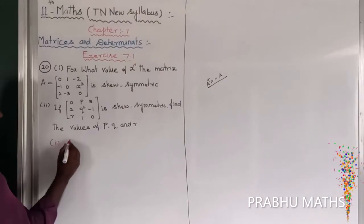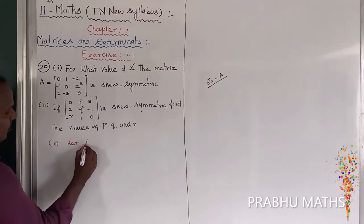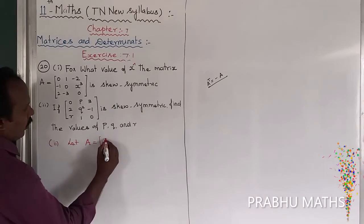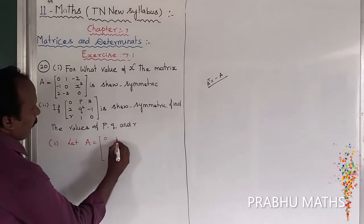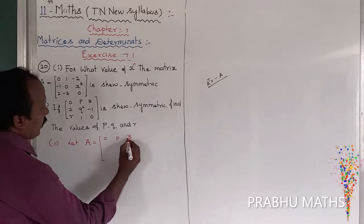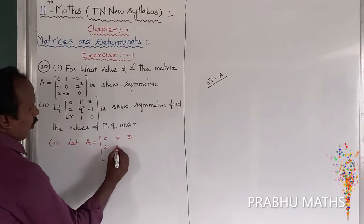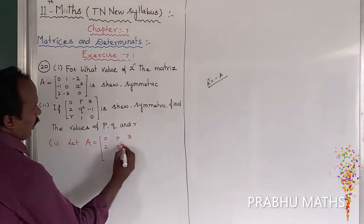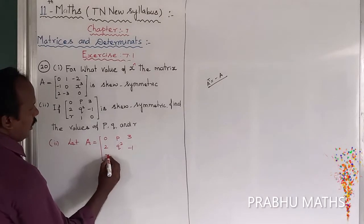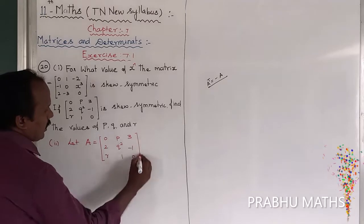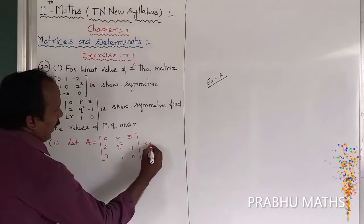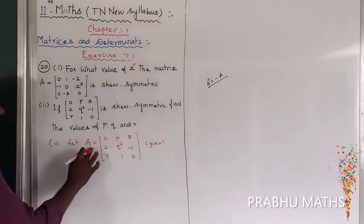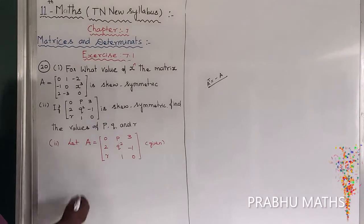First, let us consider the given matrix A. The value of A is equal to: first row — 0, p, 3; second row — 2, q-square, minus 1; third row — r, 1, 0. Let us call this matrix A.